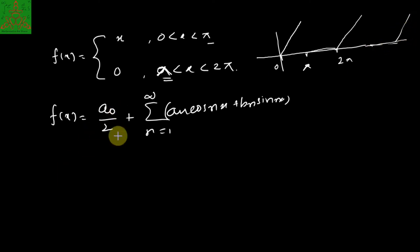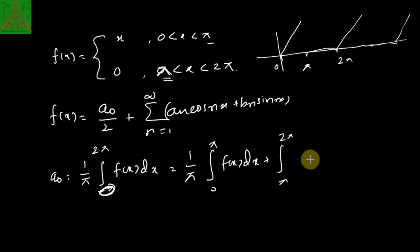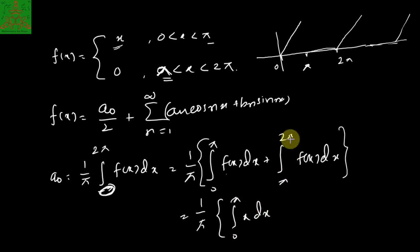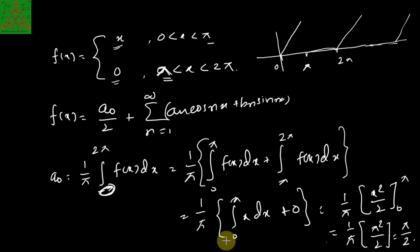Let us calculate a₀. We know a₀ = (1/π) × integral from 0 to 2π of f(x) dx. We split this into two parts: the integral from 0 to π of x dx, plus the integral from π to 2π of 0 dx. Integrating x gives x²/2, and applying the limits gives (1/π)(π²/2), so a₀ = π/2.